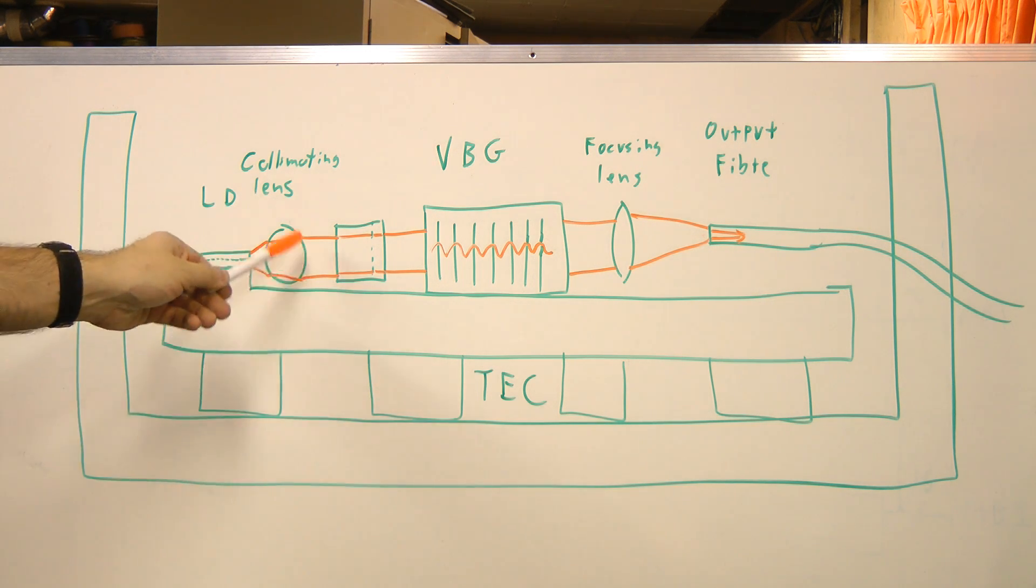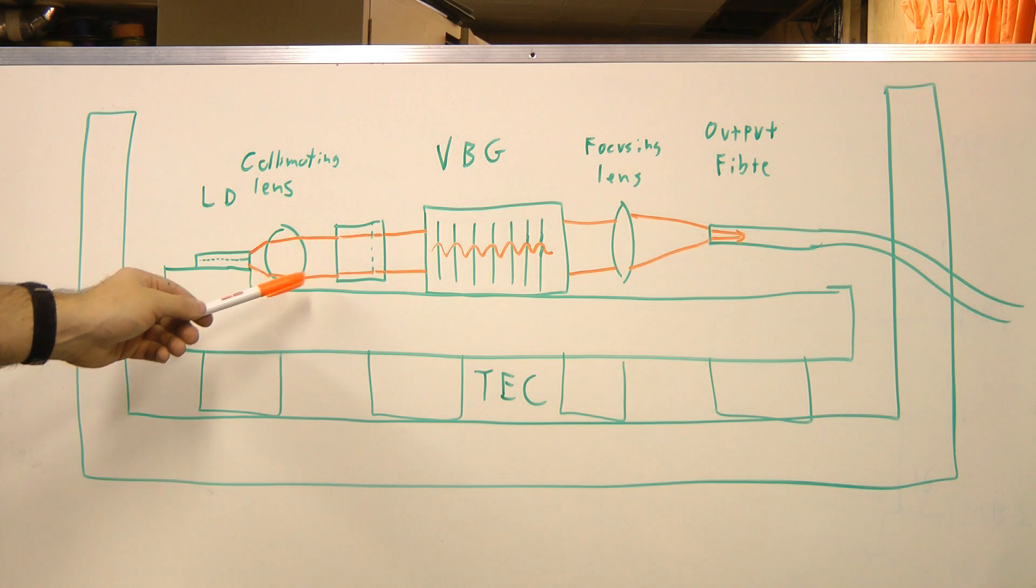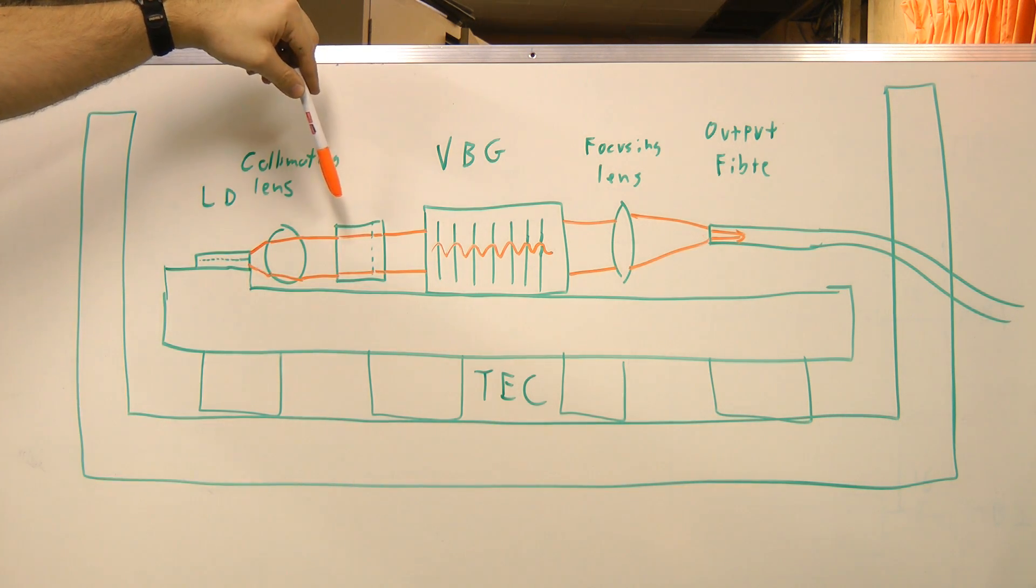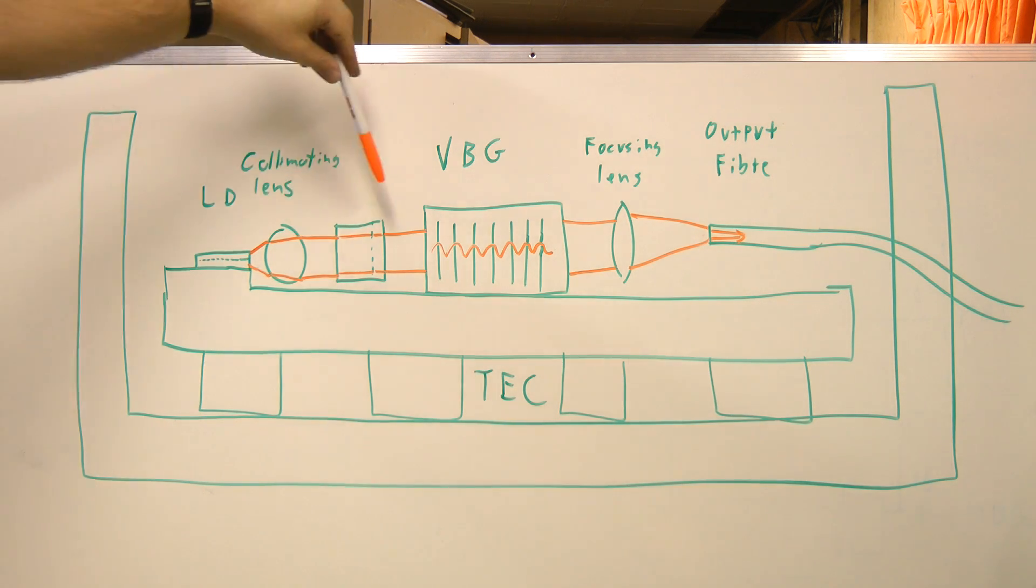So that's collimated by a typically barrel shaped lens. A second lens might then collimate the other axis if required. That produces a collimated beam which then goes through the volume Bragg grating element.